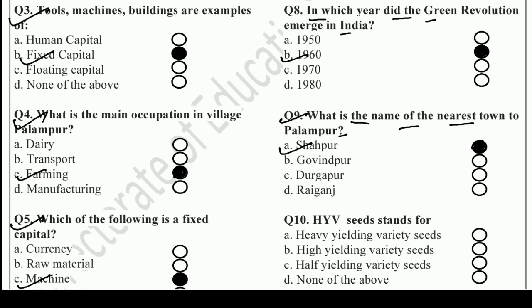The last question: What does HYV seeds stand for? Options are Heavy Yielding Variety seeds, High Yielding Variety seeds, Half Yielding Variety seeds, and None of the above. The right answer is B — High Yielding Variety seeds. That's all for this worksheet — we'll meet in the next worksheet. Till then, goodbye.